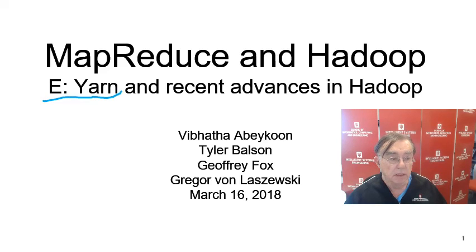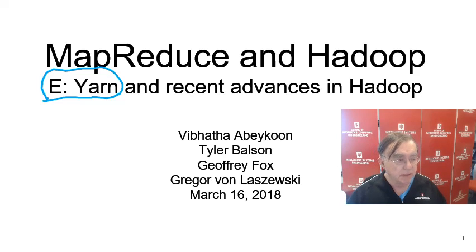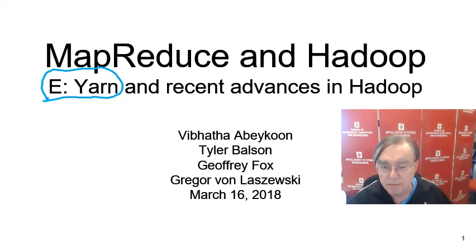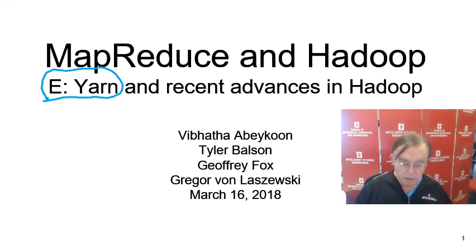This section discusses YARN and other recent changes to Hadoop, in particular Hadoop 3, although YARN came in with Hadoop 2. Hadoop is still making significant changes, and that's important because there are many applications that just need Hadoop — probably 75% of all big data jobs. So we need to make those run as fast as possible with the greatest efficiency and the greatest possible fault tolerance.